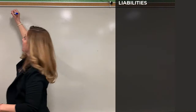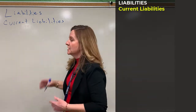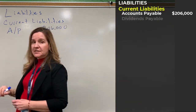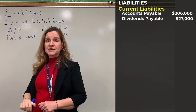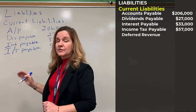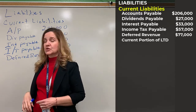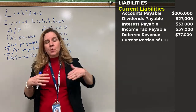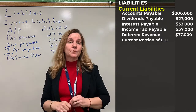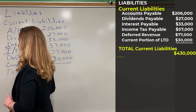Now we're going to go over to liabilities. I'll put a header for liabilities and then a header for current liabilities. Remember there are just two categories for liabilities: current liabilities and long-term liabilities. Current liabilities are liabilities we expect to pay within one year. First: accounts payable for $206,000; dividends payable for $27,000; interest payable for $33,000; income tax payable for $57,000; and deferred revenue — also known as unearned revenue — for $77,000. The last current liability is the current portion of long-term debt: the portion due in the next 12 months is considered current, and that is $30,000. Total current liabilities comes to $430,000.